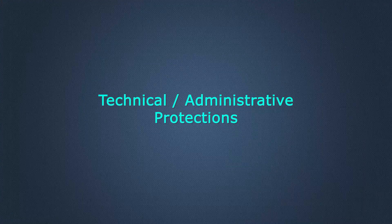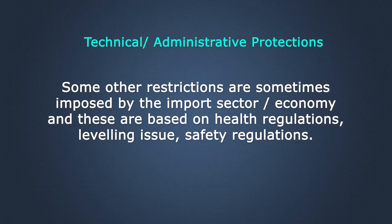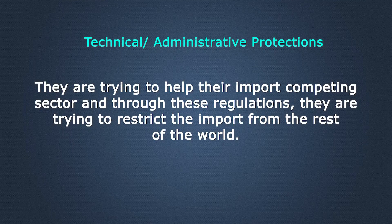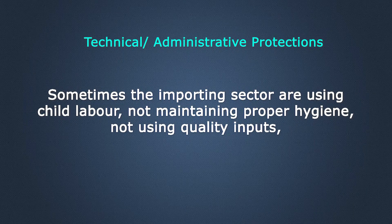Now we are going to other protection policies — these are called technical or administrative protection. Some restrictions are sometimes imposed by the importing economy based on health regulations, labeling issues, or safety regulations. Through these regulations, they are trying to reduce import and help their import-competing sector. Sometimes they claim the exporting sector is using child labor, not maintaining proper hygiene, or not using quality inputs — these are different issues sometimes generated just to reduce imports and protect the domestic economy.